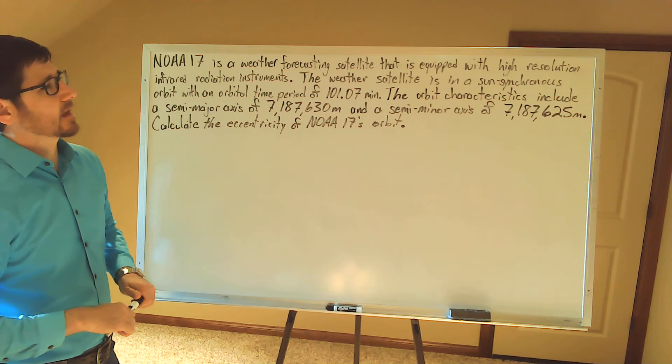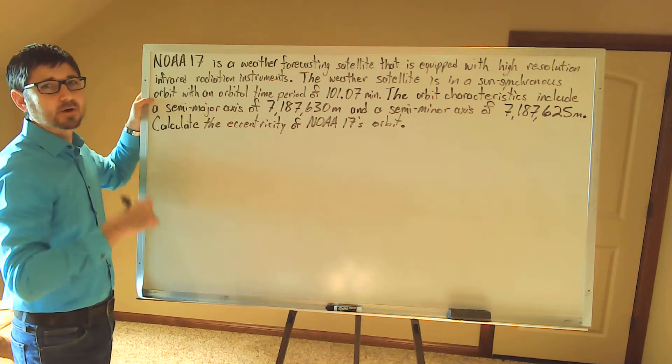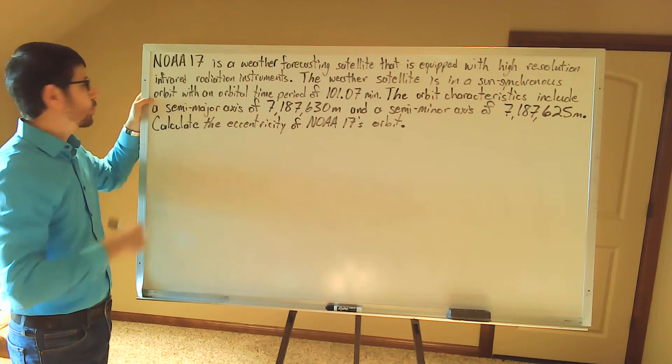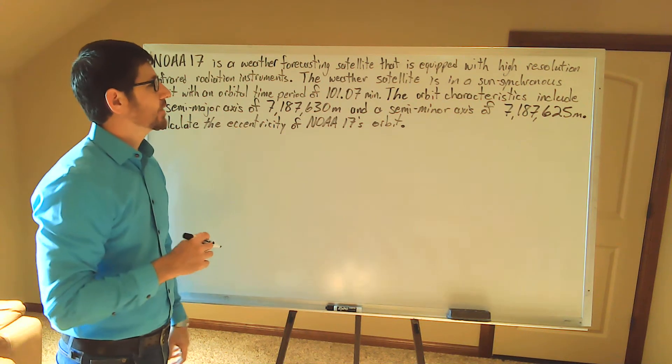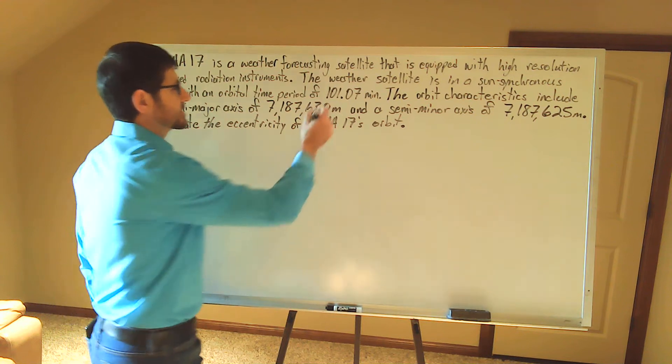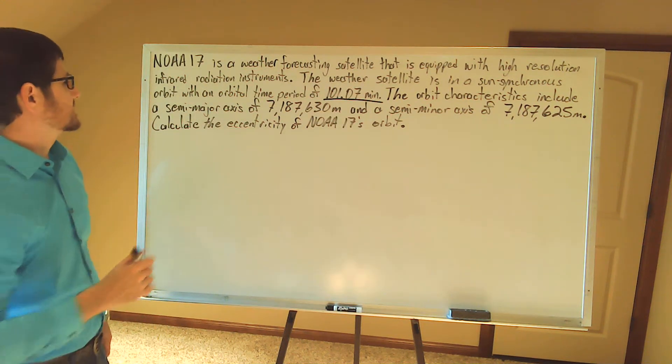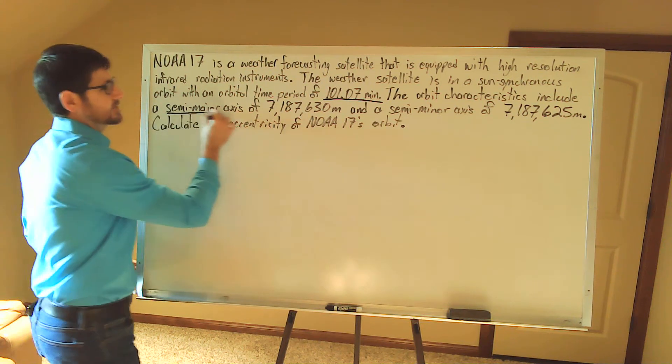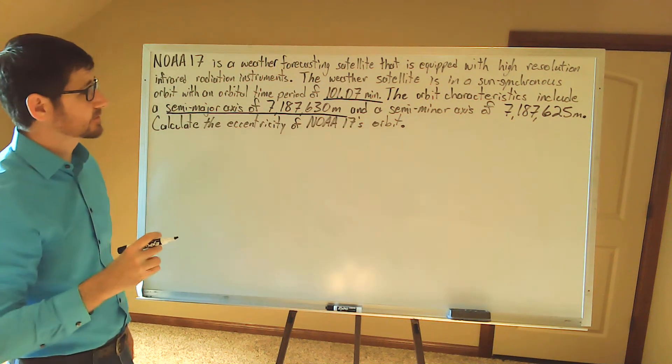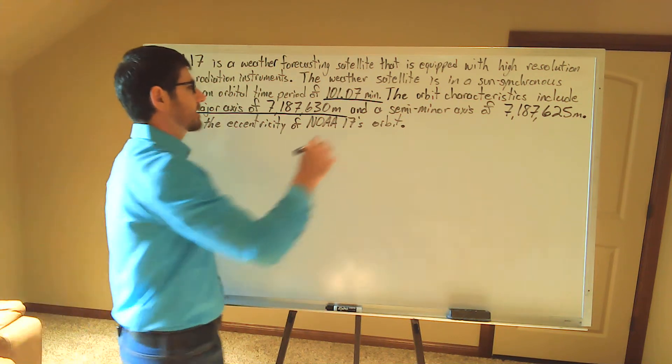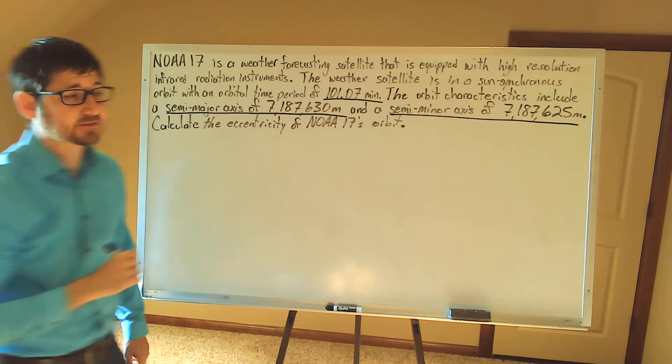The weather satellite is in a sun-synchronous orbit, so remember from our notes this is a type of polar orbit, with an orbital time period of 101.07 minutes. The orbit characteristics include a semi-major axis of 7,187,630 meters and a semi-minor axis of 7,187,625 meters.